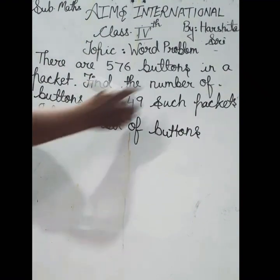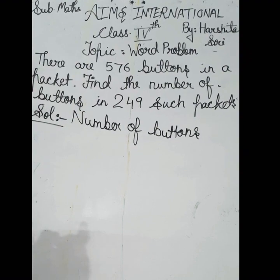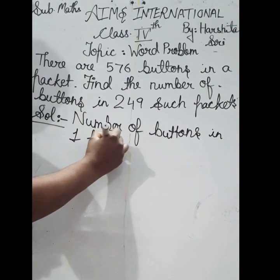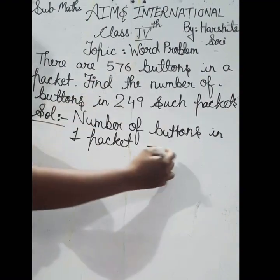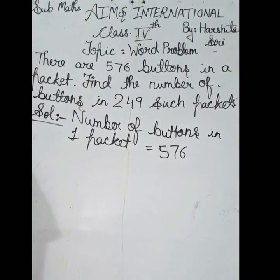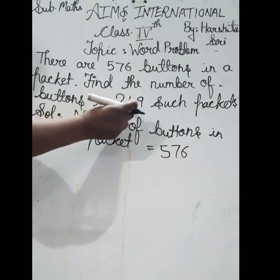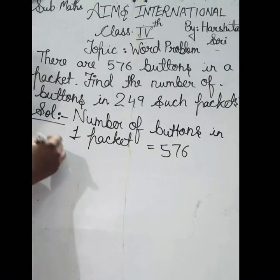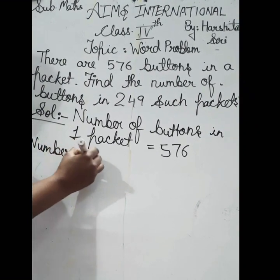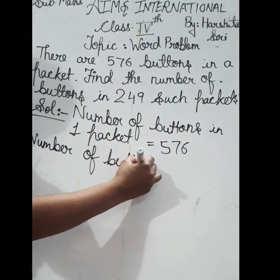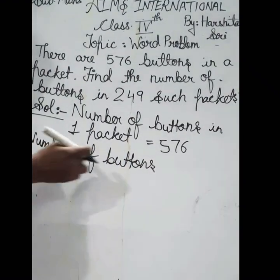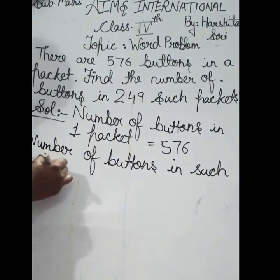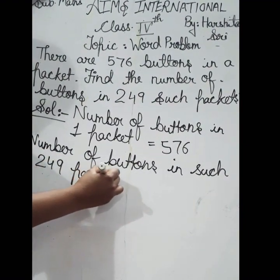Buttons तो हैं, लेकिन buttons को कहाँ रखा गया है? In a packet, एक packet में। तो number of buttons in one packet — one packet में कितने buttons हैं? 576. Now, find the number of buttons in 249 such packets। Next statement होगा: number of buttons in such 249 packets।